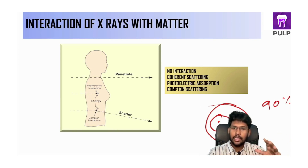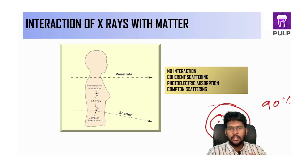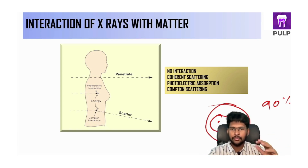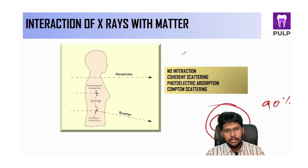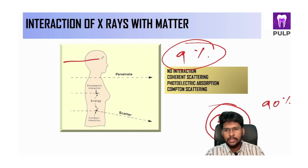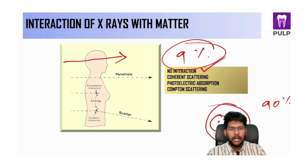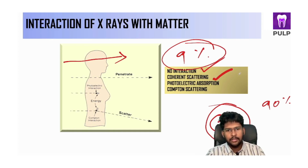But you have a large number of atoms, so it is not possible to come out of the body without interaction. About 91% undergo interaction of some kind, whereas exactly 9% of x-rays go inside the human body and come out without any interaction. Without interaction there are 9%, and the other interactions we see are coherent scattering, photoelectric absorption, and Compton scattering.